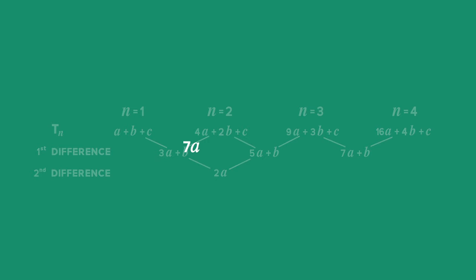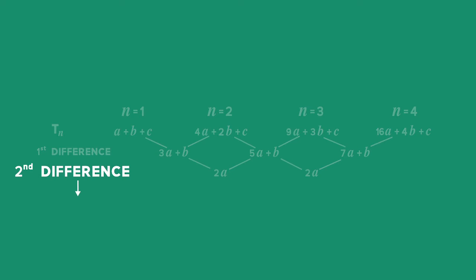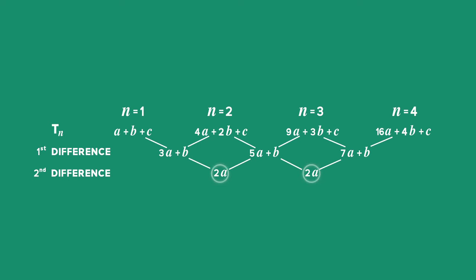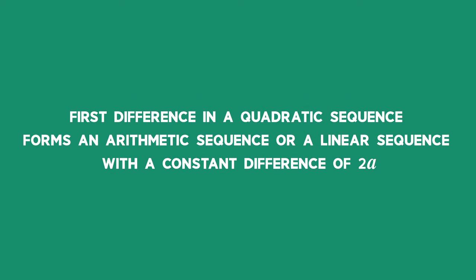Similarly, 7a + b subtract 5a + b once again gives a constant second difference of 2a. So when we have a quadratic sequence, the second difference is constant and has the value 2a. This can help you determine the general term. Also, the first differences in a quadratic sequence form an arithmetic or linear sequence with a constant difference of 2a.